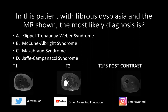The answer here is going to be Mazabraud syndrome, and I'll explain why. We have a T1 iso-intense or hypo-intense muscle lesion that's fairly well-defined. It's light bulb bright on T2, almost looks cystic, but when we give contrast, there's some heterogeneous contrast enhancement.